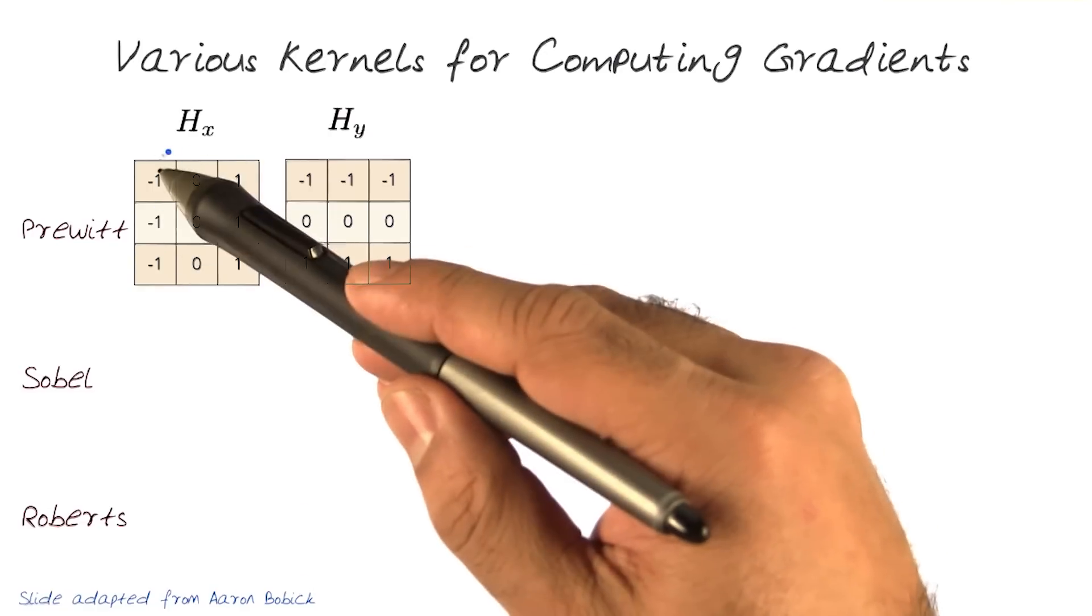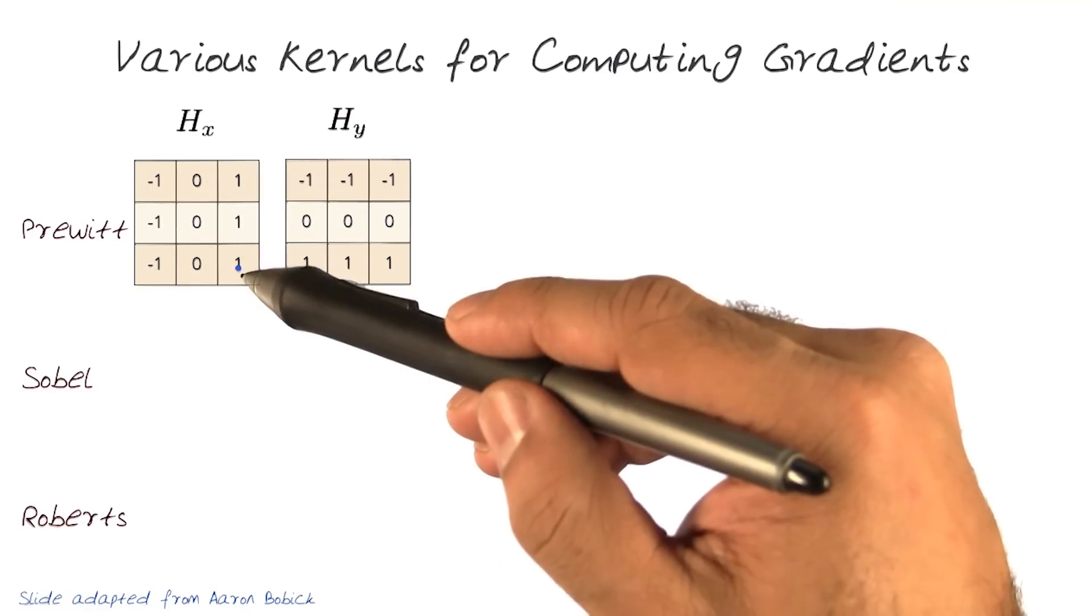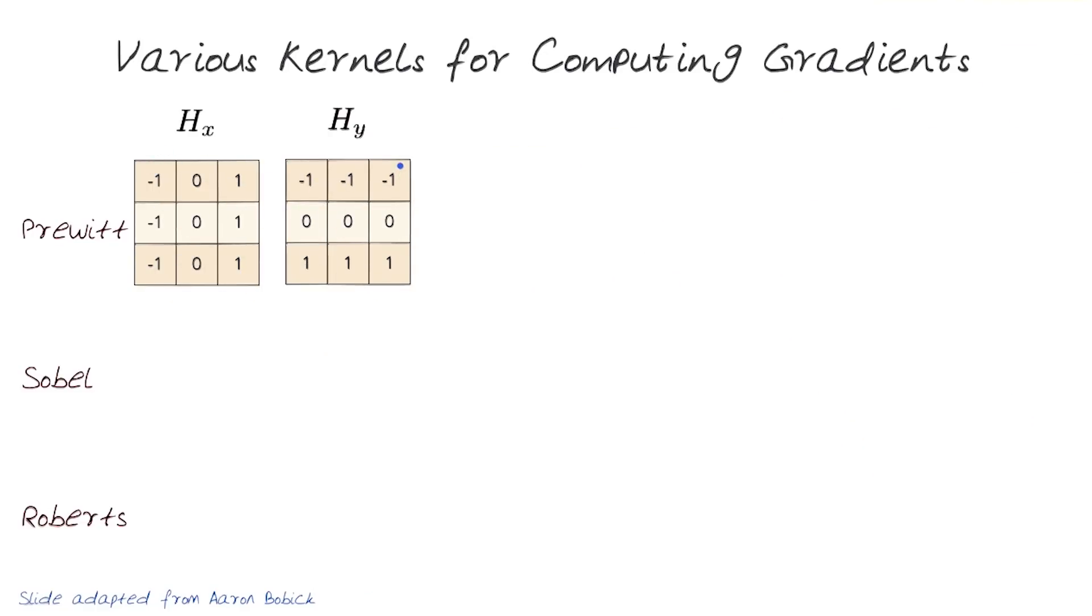The Prewitt kernel uses negative values on one side and positive values on the other, and then a transpose.